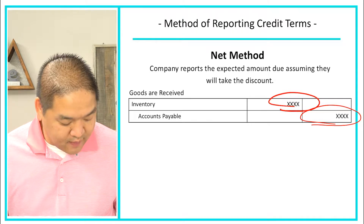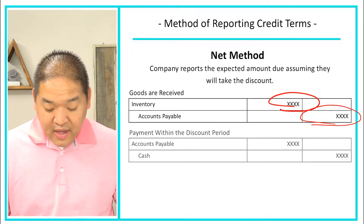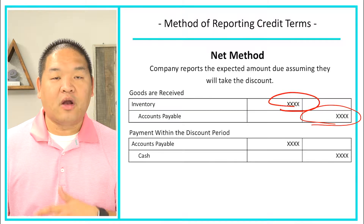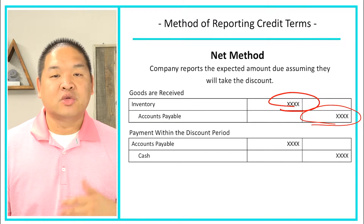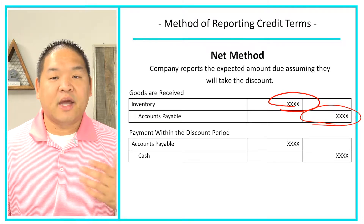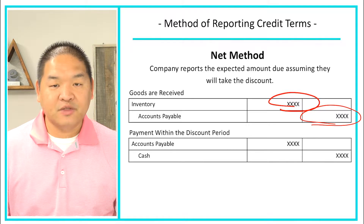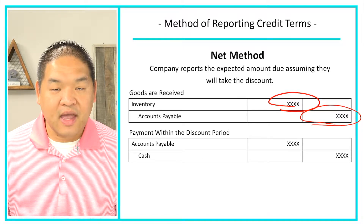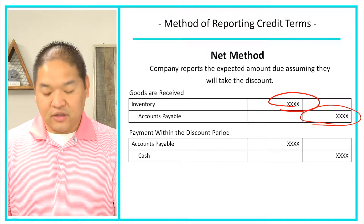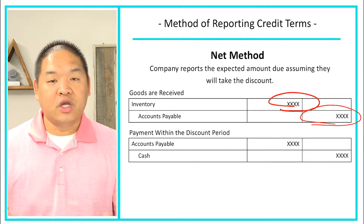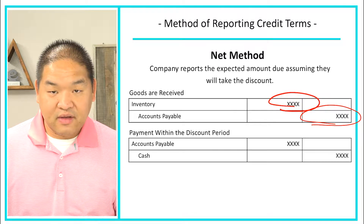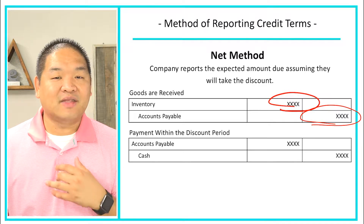If we pay within the discount period, there's no adjustment because we've already adjusted for the discount. We simply credit cash for $980 and debit accounts payable for $980 to reduce the liability — the amount we owe to our vendor. In this case, we're done.